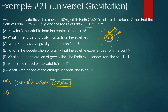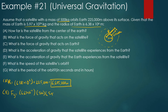Part B: what is the force of gravity that acts on the satellite? Force of gravity equals G × m_satellite × m_Earth / R². That's (6.67 × 10⁻¹¹) × 500 × (5.97 × 10²⁴) / (6,605,000)². Calculating: 6.67 × 10⁻¹¹ × 500 × 5.97 × 10²⁴ / (6,605,000)² = 4,563.8 N.